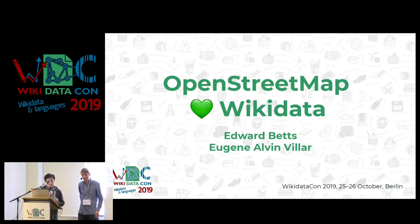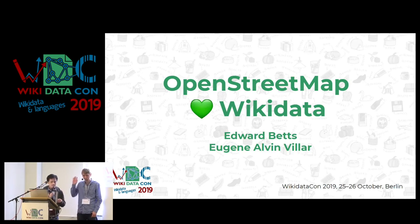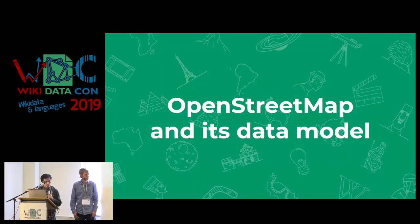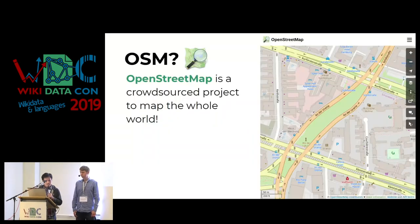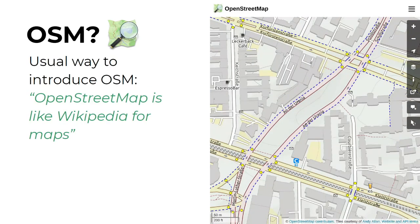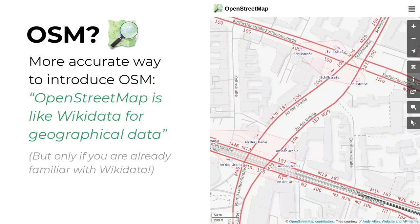So it's a show of hands — who here has an OpenStreetMap account? Okay, some. So probably this is not new to you, but for those who are not familiar with OpenStreetMap, we'll give an introduction to OpenStreetMap and its data model. So basically what is OpenStreetMap? It's basically a crowdsource project to map the whole world.